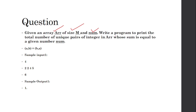You have to write a program to print the total number of unique pairs of integers in the array whose sum is equal to the given number num. Let's see the first example — this is your array and its size, and num is 6.